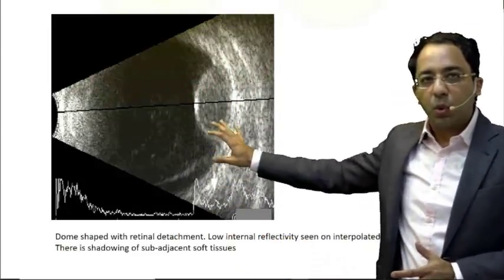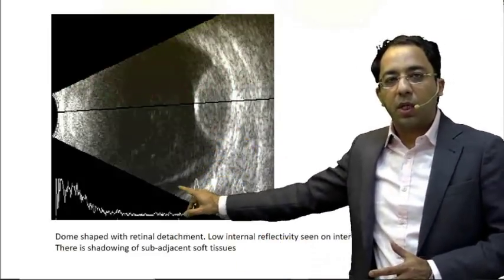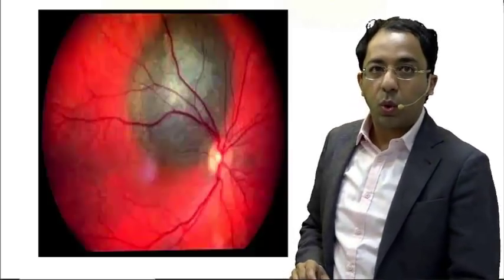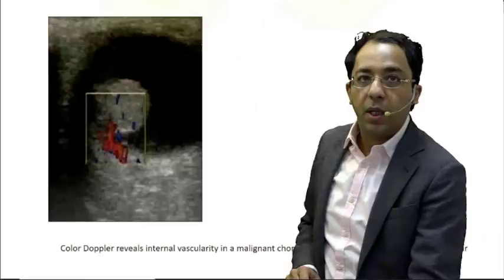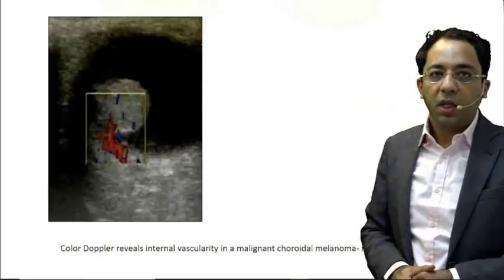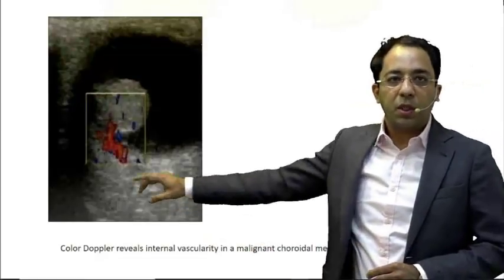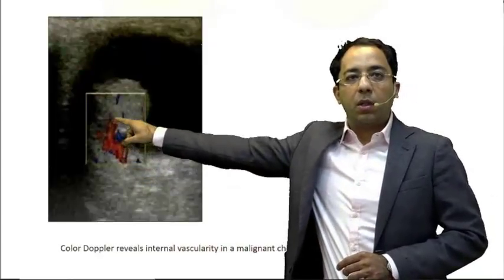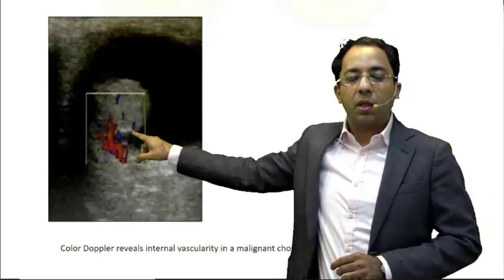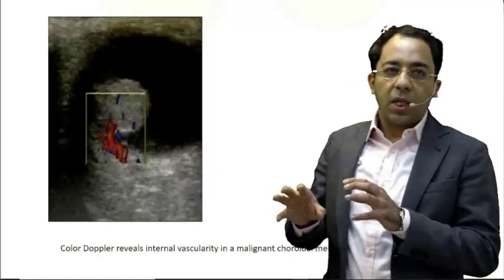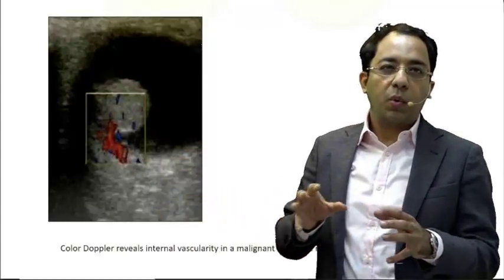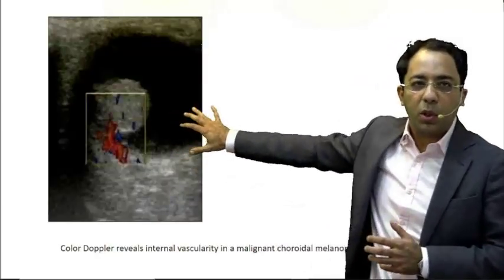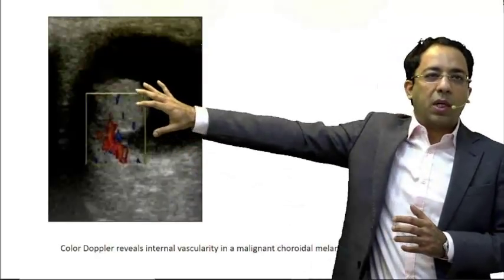In addition, we are also able to see retinal detachment on the B-scan. On the color Doppler image of this patient, we can see a feeding vessel at the base of the tumor with some internal vascularity. This is slightly different from a hemangioma — hemangioma would not have such a feeding vessel at the base; it would have more spotty, diffuse vascularity within itself.